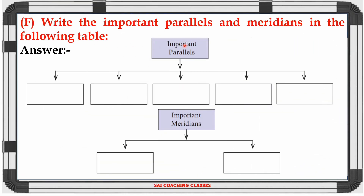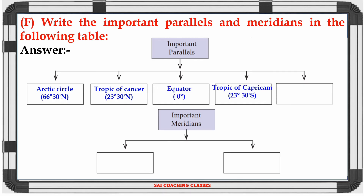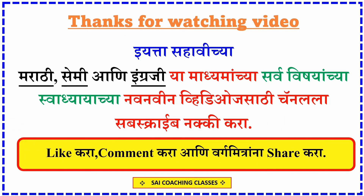Question F: Write the important parallels and meridians in the following table. Important parallels are: Arctic Circle, Tropic of Cancer, Equator, Tropic of Capricorn, Antarctic Circle. Important meridians are: Prime Meridian (Greenwich Meridian) and 180 degree Meridian. Thanks for watching the video. Please subscribe to the channel, like, comment, and share with your friends.